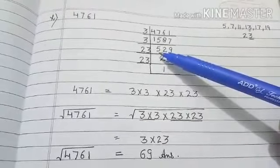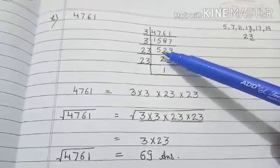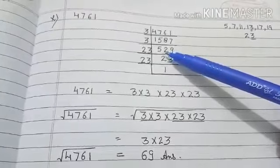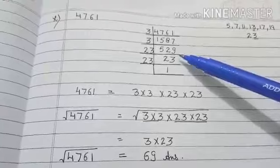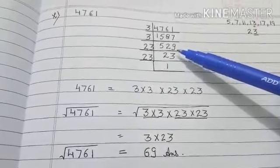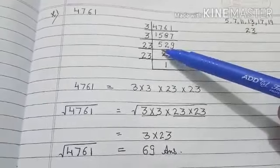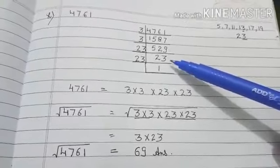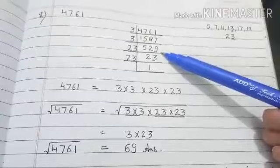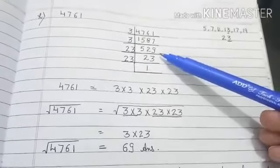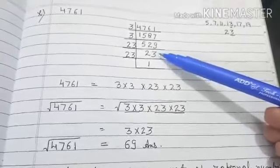11 times 4 is 44, so 6 plus 8 is 14, so 1 is left. So 11 will not work. Same way you will check for 13. It will not divide by 13. Then you will look for the number 17, then it will divide by 23, class.